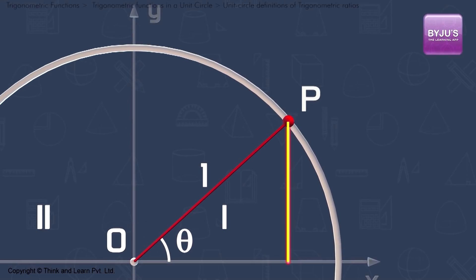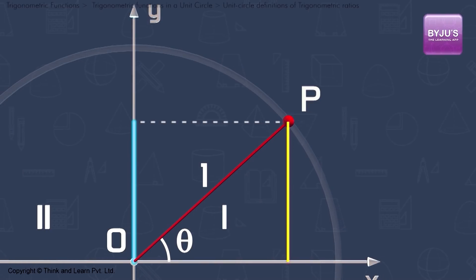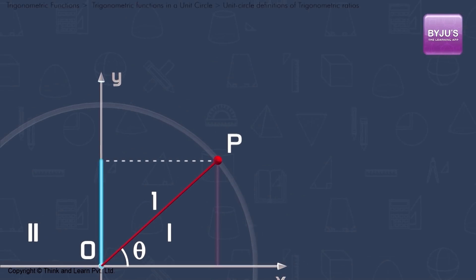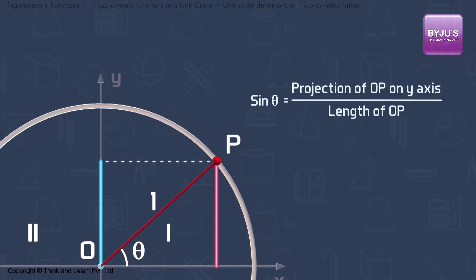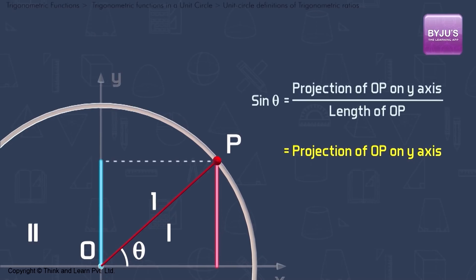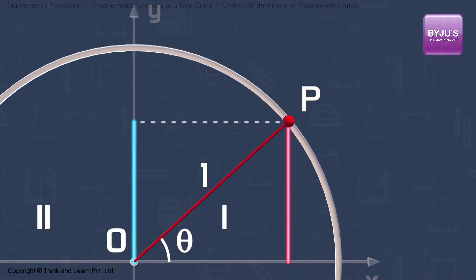Now the opposite side has the same length as the projection of OP on y-axis. So we define sin θ equals projection of OP on y-axis divided by length of OP. Now this value will be equal to projection of OP on y-axis since OP is 1. This is similar to our earlier definition of sin θ, that is opposite side by hypotenuse. We can use this new definition to find sine of any angle.